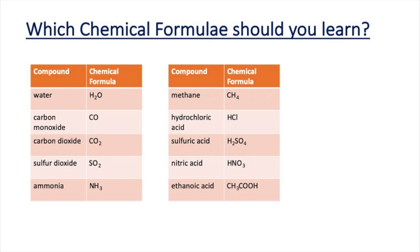Now let's get back to compounds. For the majority of compounds we can work out the chemical formula from information given in the exam, but there are some compounds we recommend you learn. In these two tables I've included compounds where it's important to learn the chemical formula: water, carbon dioxide, sulfur dioxide, ammonia, carbon monoxide — compounds you'll encounter in chemical reactions studied at GCSE. I've also included methane because at GCSE you will study organic chemistry and methane is one of the first compounds covered.